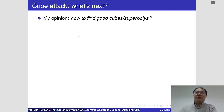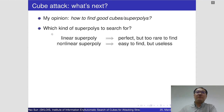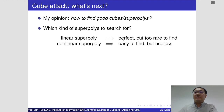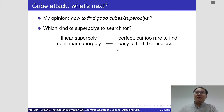The related works on finding good cubes are quite few. We talk about which kind of superpolys should be searched for. Firstly, linear superpolys — they are perfect in theory, but they are too rare to find, and moreover they may not exist at all for higher rounds of stream ciphers. Secondly, general nonlinear superpolys — they can be found almost everywhere, but they are useless.